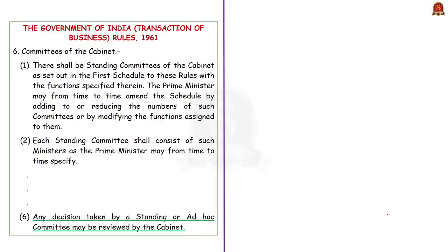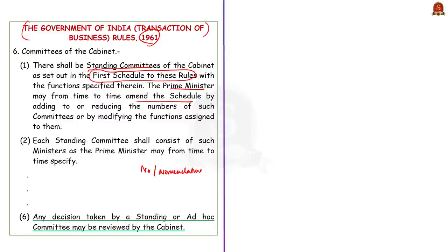The Government of India Transaction of Business Rules of 1961 mandates that there shall be Standing Committees of the Cabinet as set out in the first schedule of these rules, and the Prime Minister has the power to amend this schedule. According to requirements, the PM sets up Cabinet Committees, so the number, nomenclature, and composition vary from time to time — they are not fixed. You need to be thorough with current affairs to know the present set of Cabinet Committees.